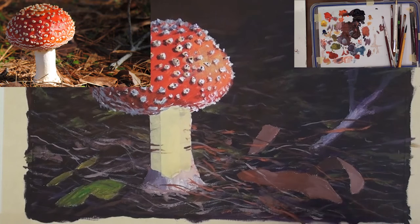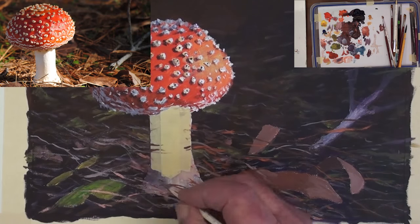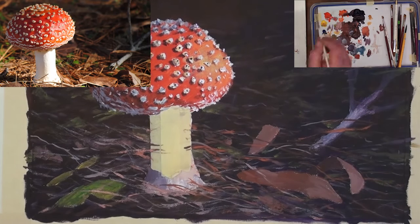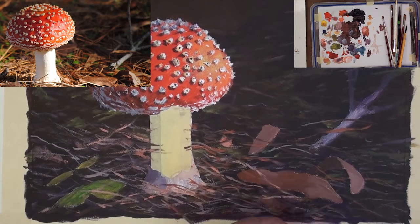Brighten up some of the twigs with a light orange brown color. Continue building up the amount of small twigs. A lot lying around.